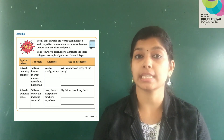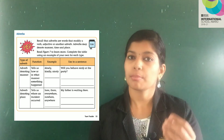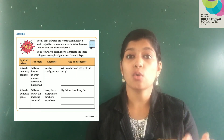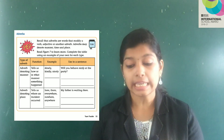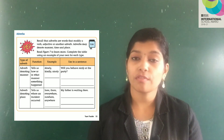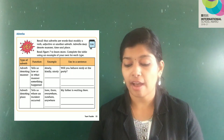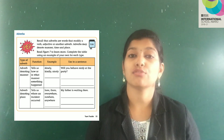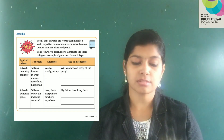The second type is adverb denoting place. It tells us where an incident occurred. Where something happened is told by adverb denoting place. Here, there, everywhere, nowhere, anywhere are examples of adverb denoting place. Example sentence: My father is waiting there. So, there is the adverb denoting place — where is the father? My father is there. You have to make your own sentence with adverbs denoting place.